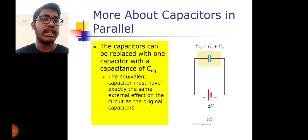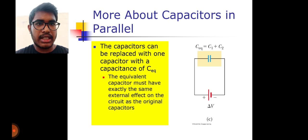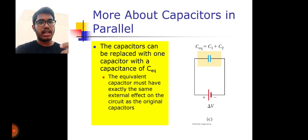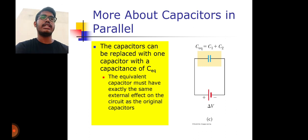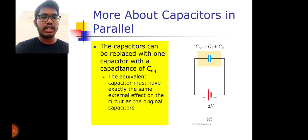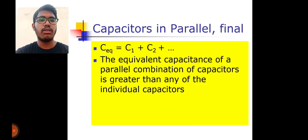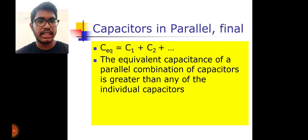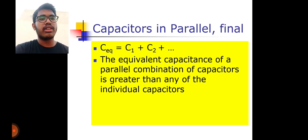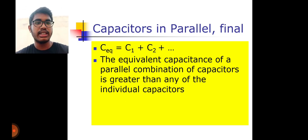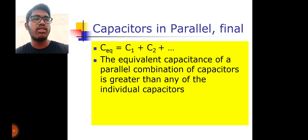More about capacitors in parallel: the capacitors can be replaced with one equivalent capacitor with capacitance C_eq. In parallel, C equivalent equals C1 plus C2. The equivalent capacitor must have exactly the same external effect on the circuit as the original capacitors. The final result is C_eq equals C1 plus C2 plus C3 and so on. The equivalent capacitance of a parallel combination is always greater than any individual capacitor — C_eq is always greater than C1 and greater than C2.